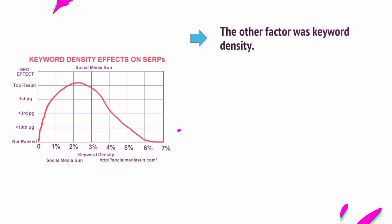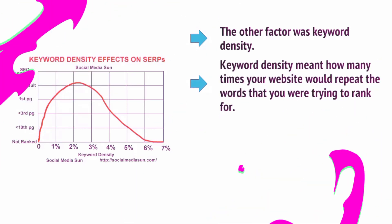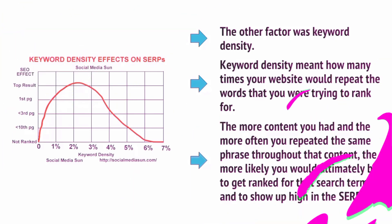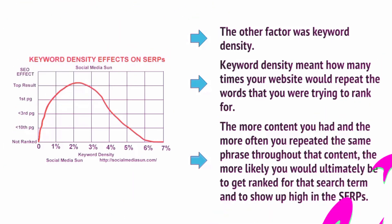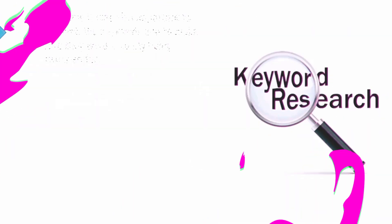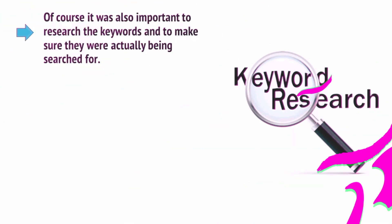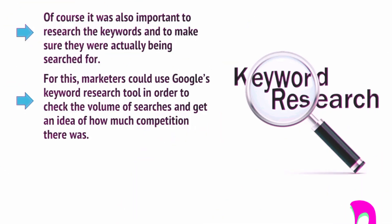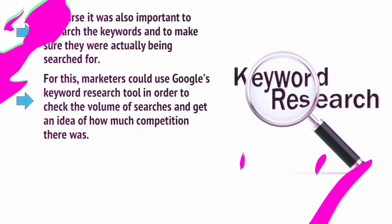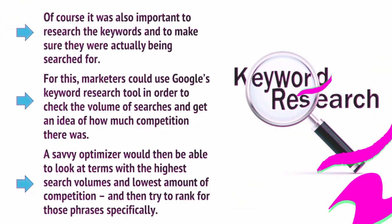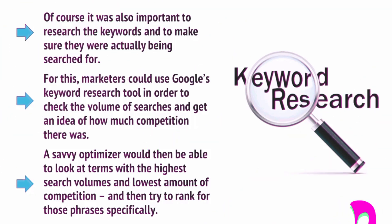The other factor was keyword density — how many times your website would repeat the words that you were trying to rank for. The more content you had and the more often you repeated the same phrase throughout that content, the more likely you would ultimately be to get ranked for that search term and to show up high in the SERPs. It was also important to research keywords and make sure they were actually being searched for. Marketers could use Google's keyword research tool to check search volume and competition. A savvy optimizer could then look for terms with the highest search volumes and lowest competition and try to rank for those phrases specifically.